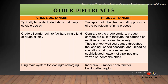Another difference is that crude oil tankers use a ring main system for loading and discharging, whereas most product tankers have an individual dedicated pump for each tank for loading and discharging. These are some of the construction differences, but the main difference lies with the frame arrangement discussed earlier.